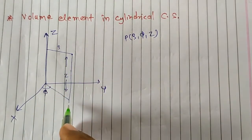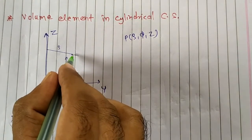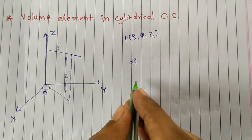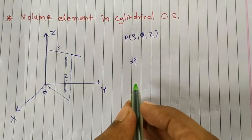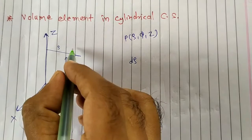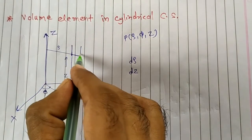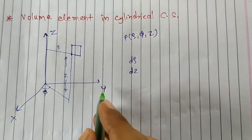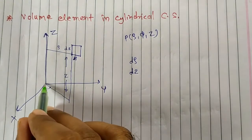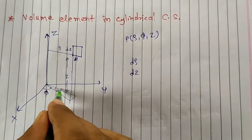We take a small increment in ρ, which is dρ. Then I increase z by a small amount dz. So I get a small area element with sides dρ and dz. Third, I want to increase φ by a small amount dφ to obtain a volume element.